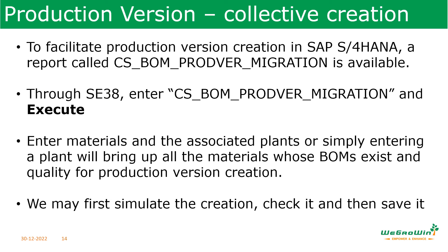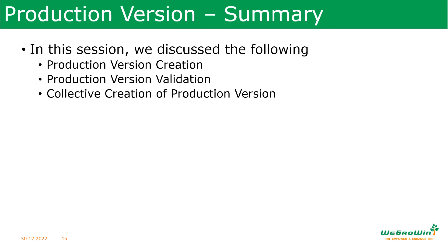In S4 HANA, there is also a way to create production versions in mass. A program is available — enter the program name in SE38, then enter the material and associated plants, or just entering the plant will bring out all materials. Through this program you can simulate and check whether the BOM and routing are clearly allocated and then save. I suggest you practice this yourself. In this session we discussed how to create a production version, how to validate it, and how to do collective creation of production versions.